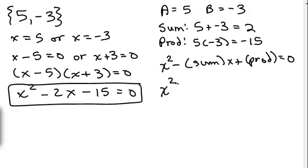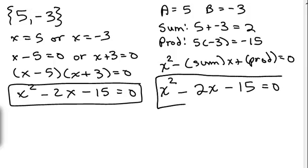So we have X squared minus, now what did we get for our sum? The sum was 2 times X. Don't forget the X plus the product. Instead of writing plus -15, I'm just going to write minus 15 equals 0. So, got the same answer.